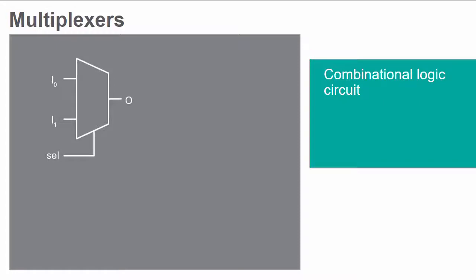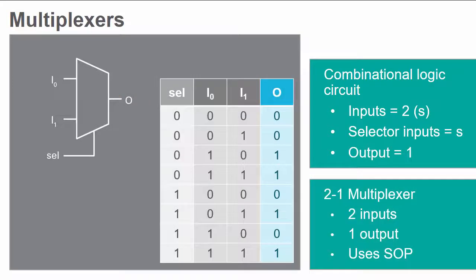Multiplexers are combinational logic circuits that have two S inputs, S selector inputs, and one output. The select input decides which of the inputs gets sent to the output. For example, the truth table of a simple 2-1 multiplexer indicates that the multiplexer's output corresponds to which of the two inputs is chosen by the selector.